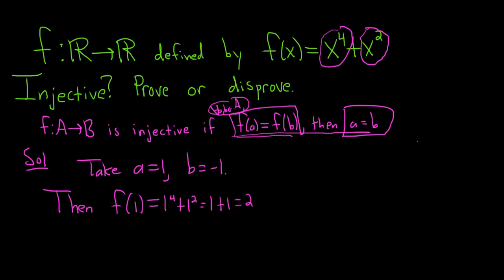which is 2. And then f of negative 1 is equal to negative 1 to the fourth plus negative 1 squared, which is just 1 plus 1, which is also 2.